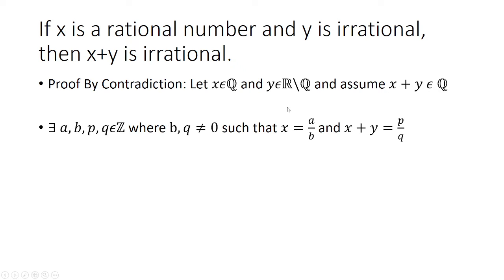So let's begin. We know that there exists a, b, p, and q that are integers, where b and q are not equal to 0, such that we set x as a rational number — so we can write it as a ratio of two integers, that would be a over b. And we set x plus y is also rational, so we can write that as p over q.